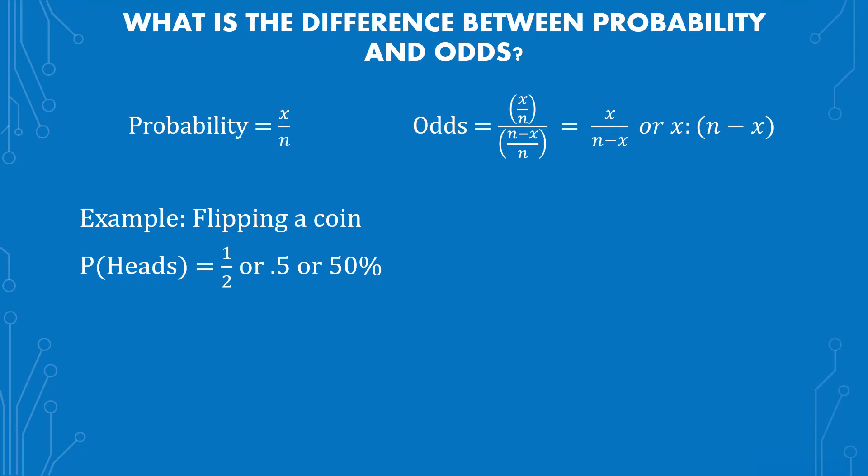The probability of getting heads is 1 over 2 or 0.5 or 50%. When it comes to the odds of heads, you have 1 over 2 on the top divided by 2 minus 1 over 2. Simplified, that's 1 over 2 minus 1, which gives you 1 over 1, which equals 1, or in ratio form, 1 to 1. So that's how you solve for both of them. Most people know probability, so now you know how to solve for the odds as well.